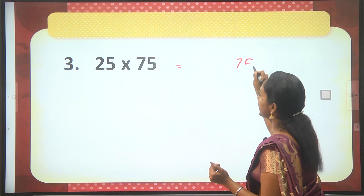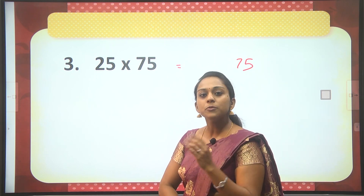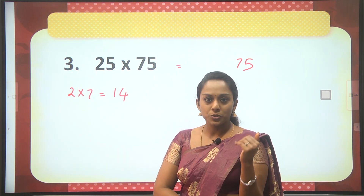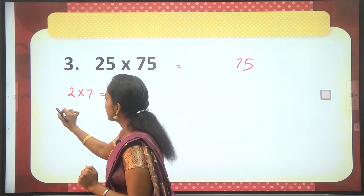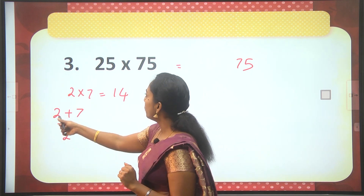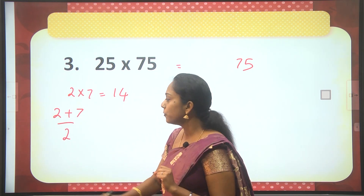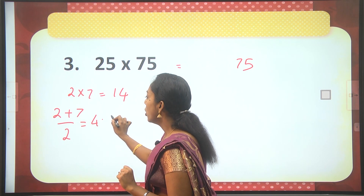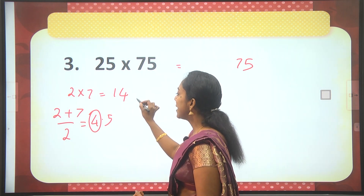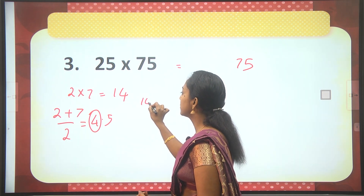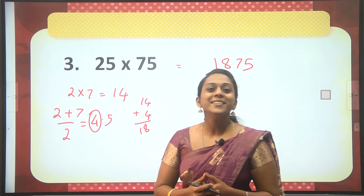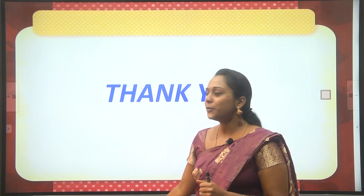So the last two digits are 75. Take the product of 2 and 7: 2 into 7 is 14. Next, take the average of 2 and 7. Keep in mind: (2+7)/2 = 4.5, but we take only the integer part, which is 4. So 14 + 4 = 18. Our answer is 1875. I hope this session was useful for you, thank you.